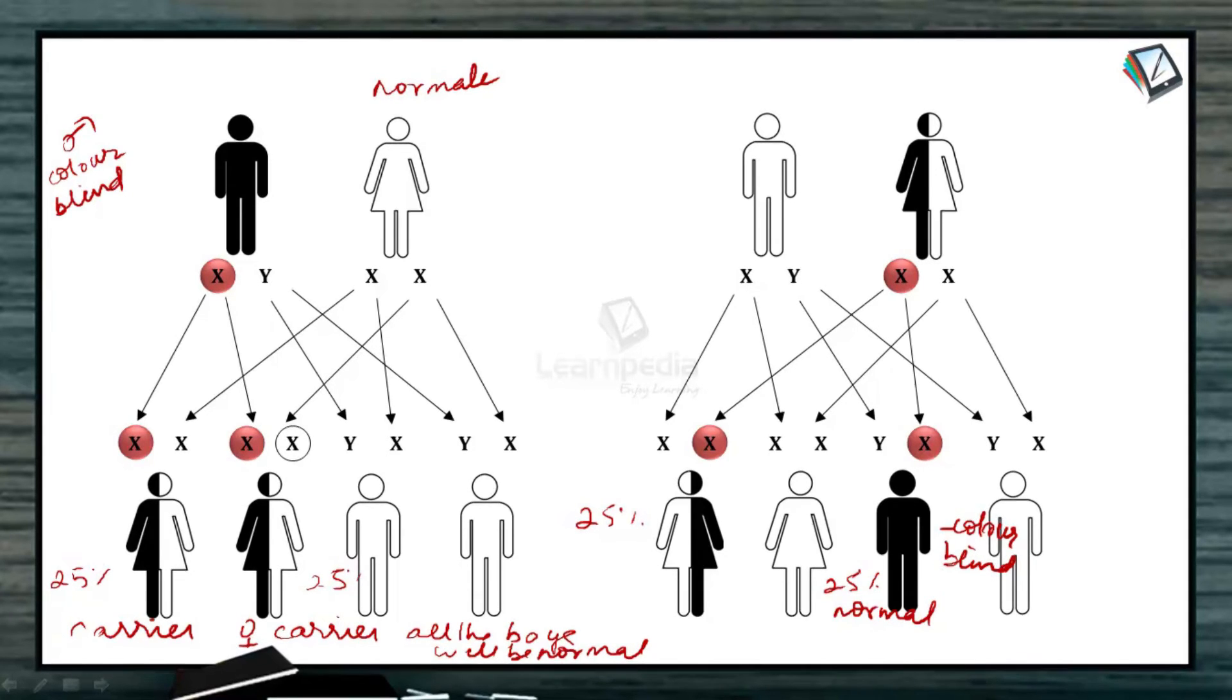So there is a 25% chance of the girl being a carrier and 25% the girl being normal, and 25% the boy being colorblind and 25% normal boy. So it all depends on this: the father is normal and the mother is a carrier.